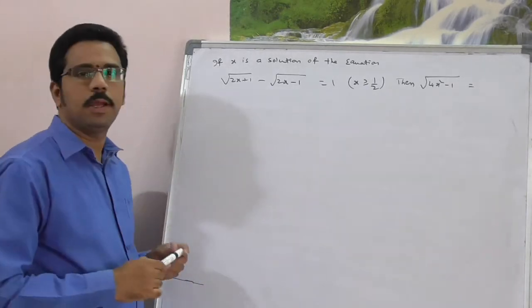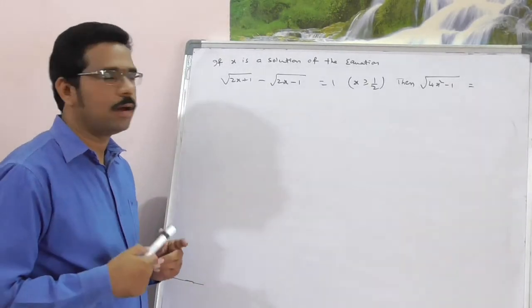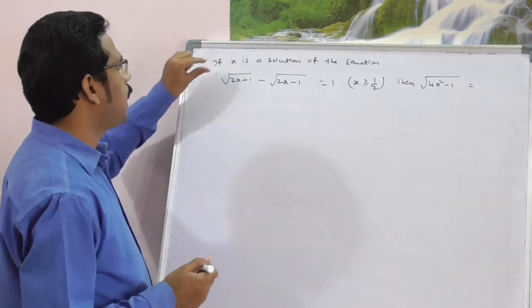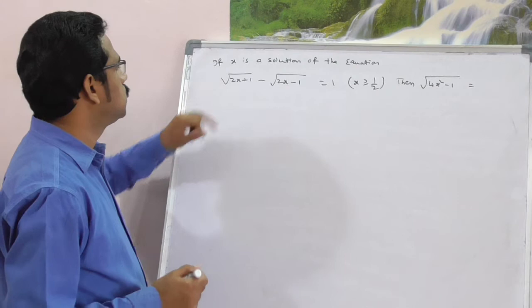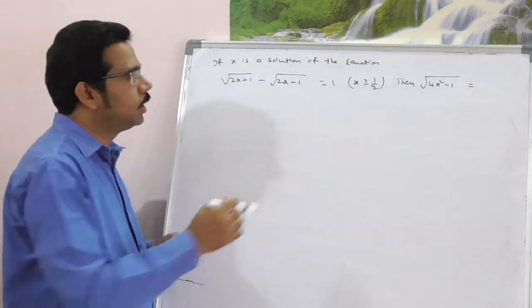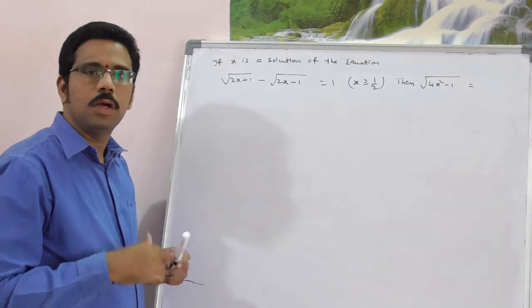Hi, this question from JEE Main online exam which was conducted on April 10, 2016. X is a solution of the equation: square root of 2x plus 1 minus square root of 2x minus 1 is equal to 1. Here given x greater than or equal to 1 by 2.